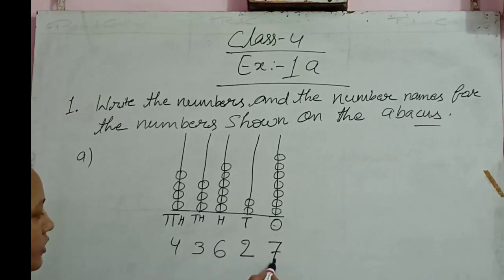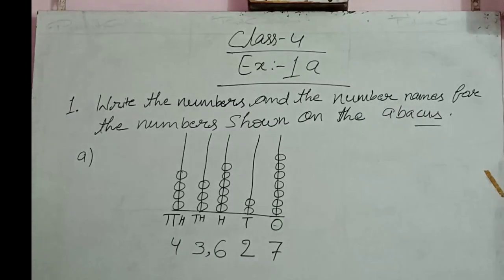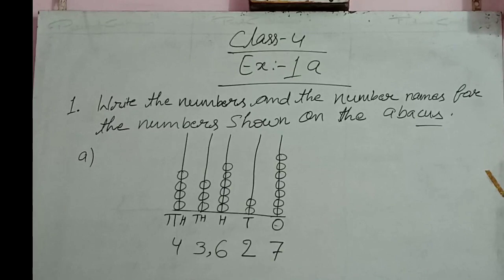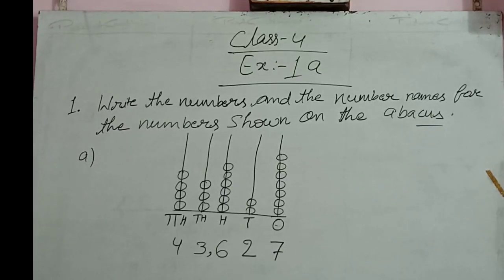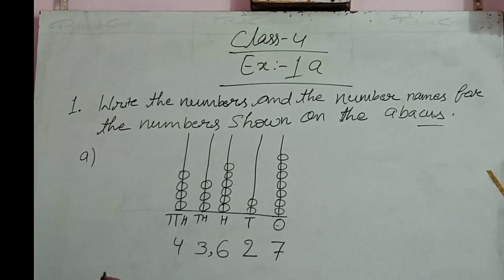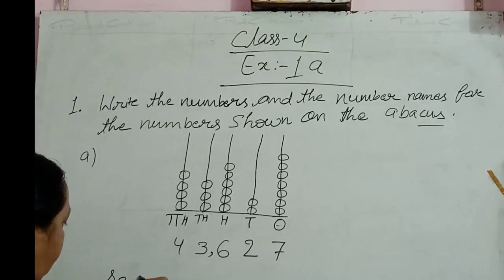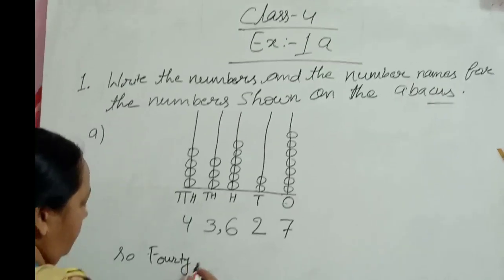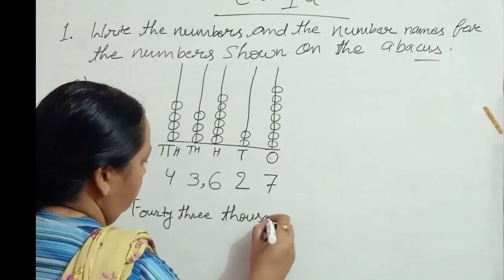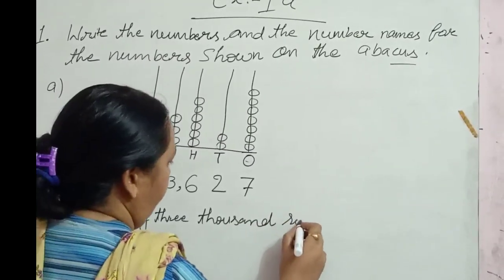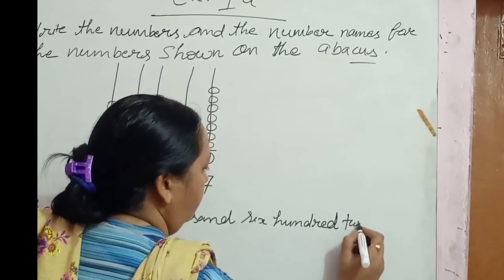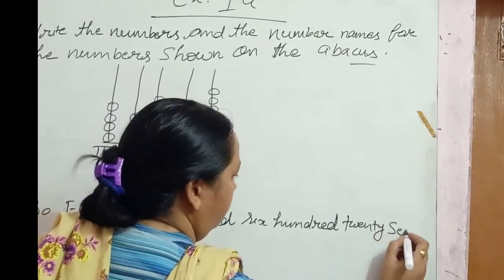We insert the comma according to the Indian numeration system: 1, 10, 100, 1000, 10,000. This is 43,627. Write the number and the number name: 43,627.